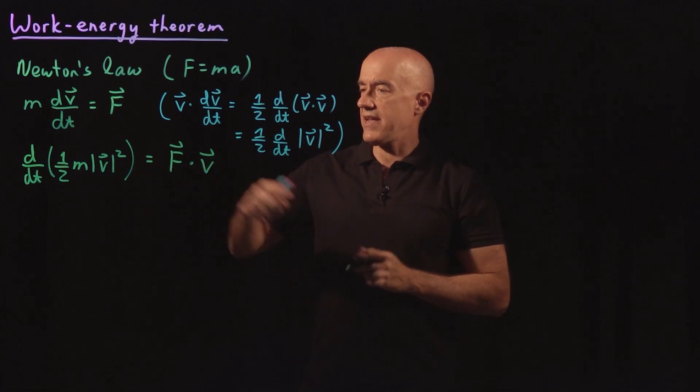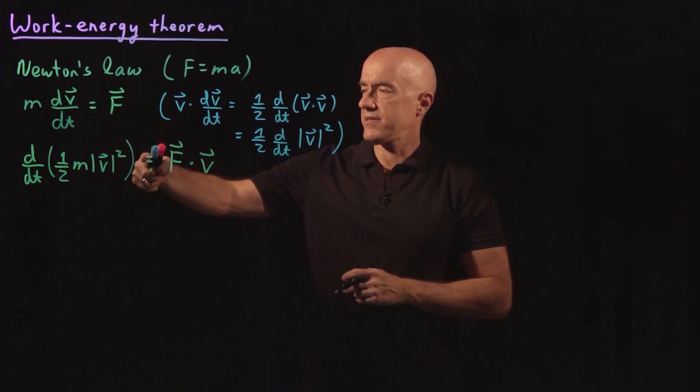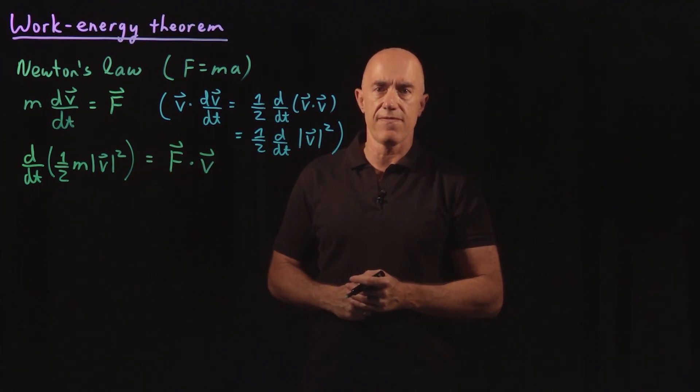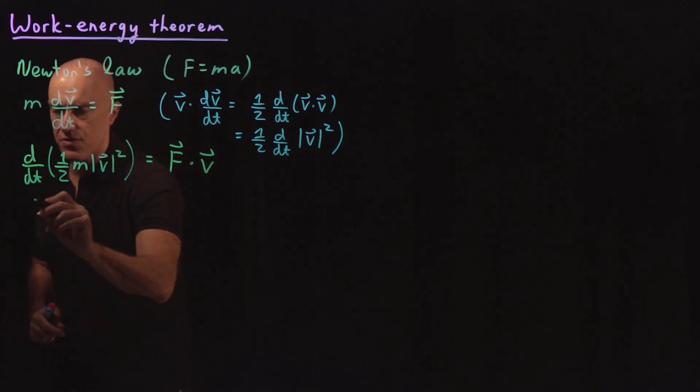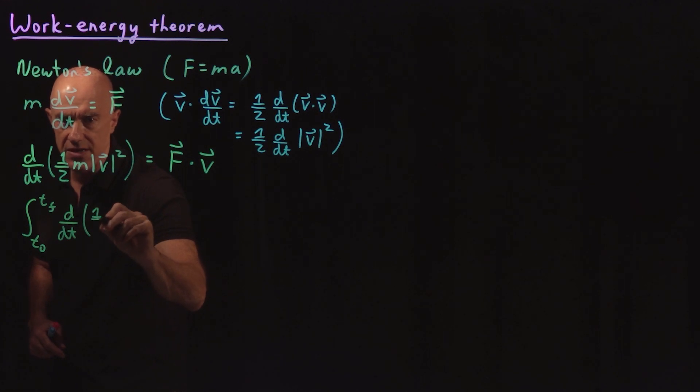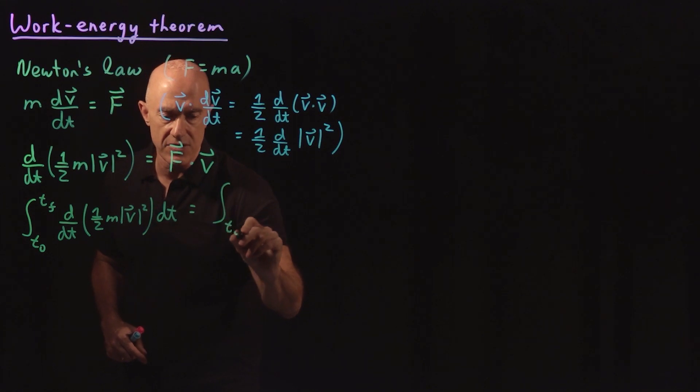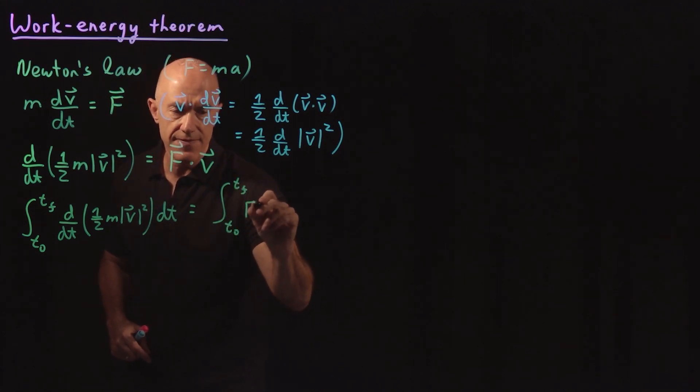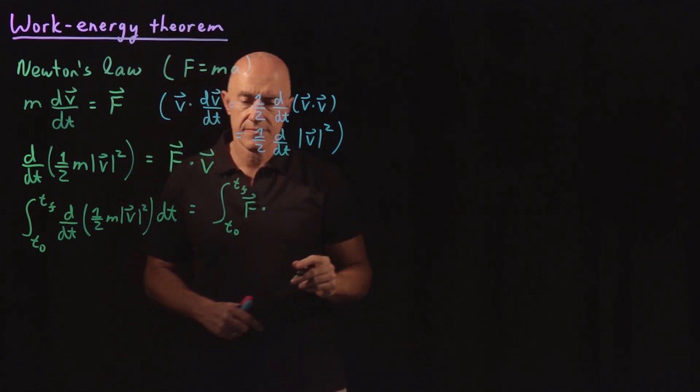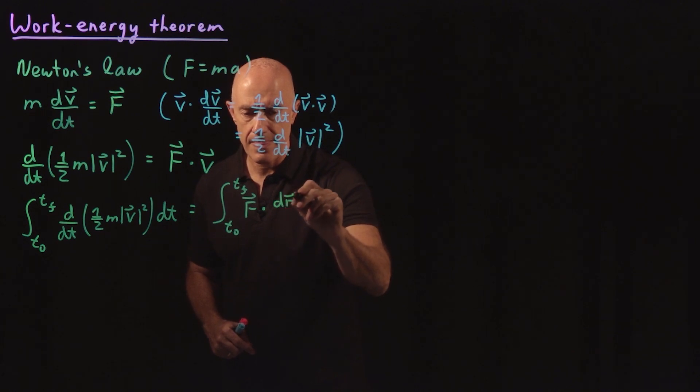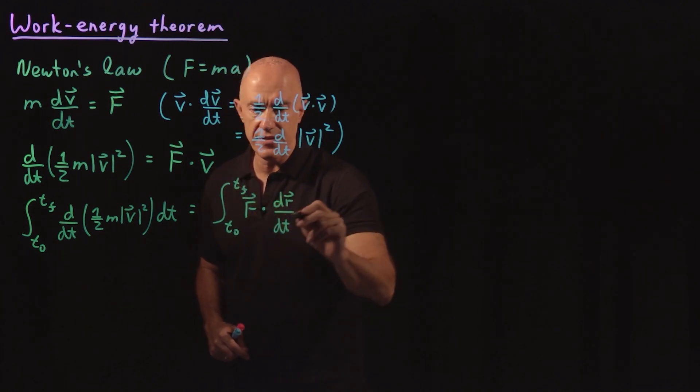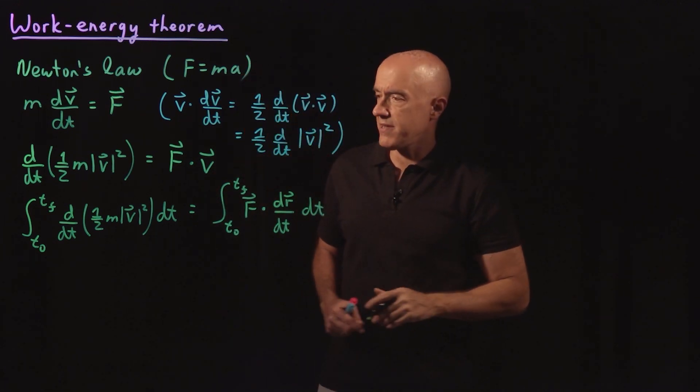To obtain the work-energy theorem then, we integrate this from some initial time to some final time. So we have the integral from some initial time to some final time of a derivative of something. So we're going to use the fundamental theorem of calculus here, one half m V squared dt. And that's equal to the integral from t naught to tf of F dot V. V now is dr/dt, and then we're integrating dt. So this simplifies.